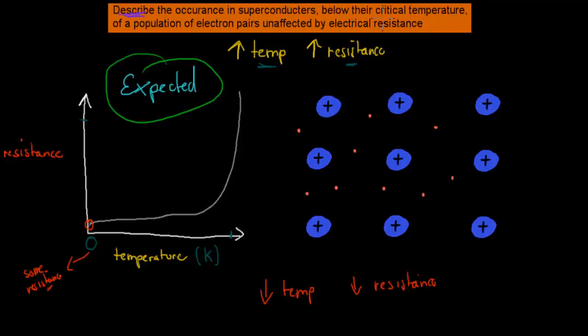Below their critical temperature—critical temperature is important—of a population of electron pairs unaffected by electrical resistance. We're saying that below a certain temperature, there are some electron pairs which we call Cooper pairs. They are completely unaffected by electrical resistance. For some elements we call superconductors, they have a temperature where if it goes lower than that, there's no resistance at all. This is what we'll talk about in this video.